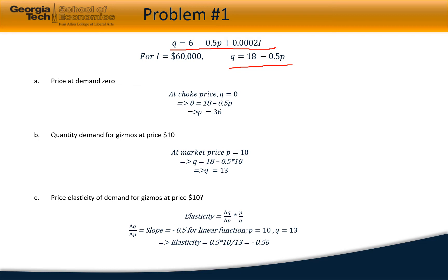At choke price, quantity equals zero, so price turns out to be $36. The next question is what is the quantity demanded for gizmos at the price $10? If we input price p equals 10 in the equation above, we get quantity equals 13.